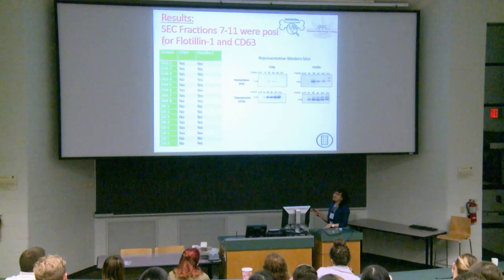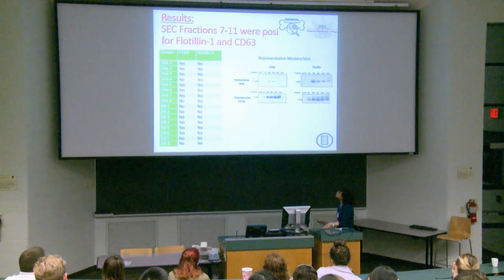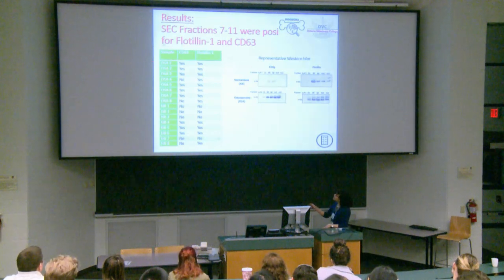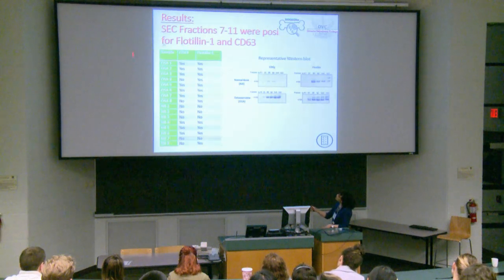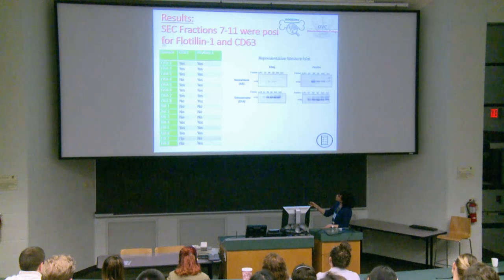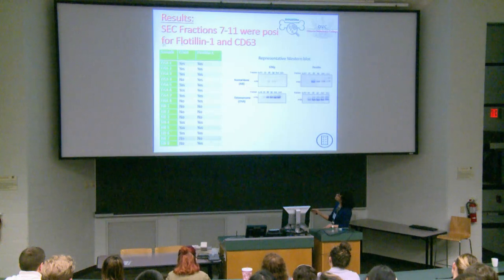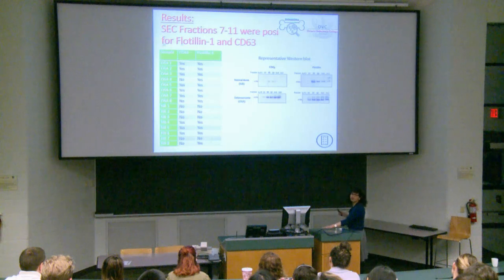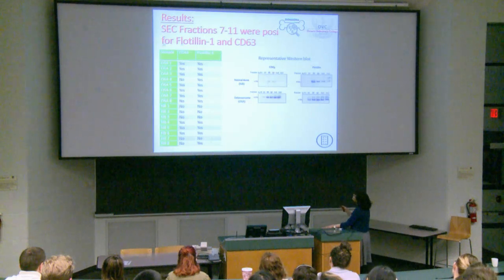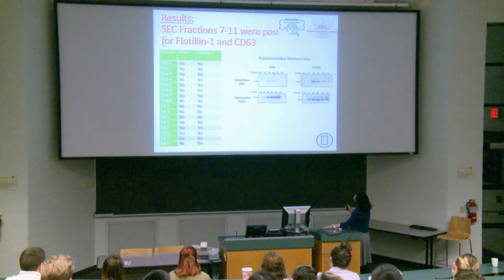In our table, we have 8 osteosarcoma samples and 8 normal bone samples. All 8 osteosarcoma samples express flotillin, while only 6 out of 8 express CD63. In contrast, only 4 normal bone samples express flotillin, and 3 of those express CD63. A representative western blot shows a patient considered negative for CD63 in normal bone, demonstrating the markers across different fractions collected.